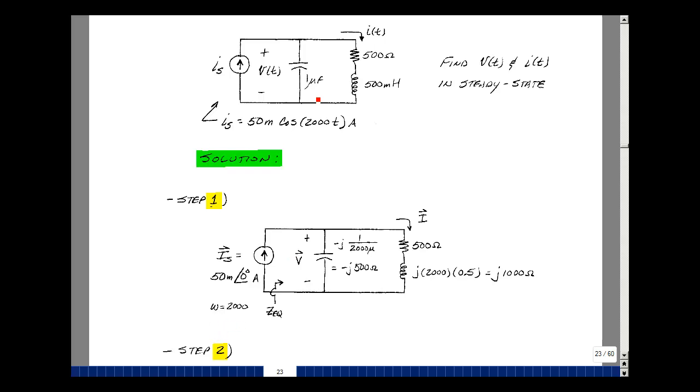Our capacitor has an impedance of minus J over omega C. And omega is 2,000 and C is one microfarad, so it gives me 2,000 micro. The reciprocal of that is 500, so minus J 500 ohms. The resistor is still the same in the frequency domain. And then the inductance is J omega L. So J 2,000 times 500 millihenries, which is a half Henry. And you get J 1,000 ohms.